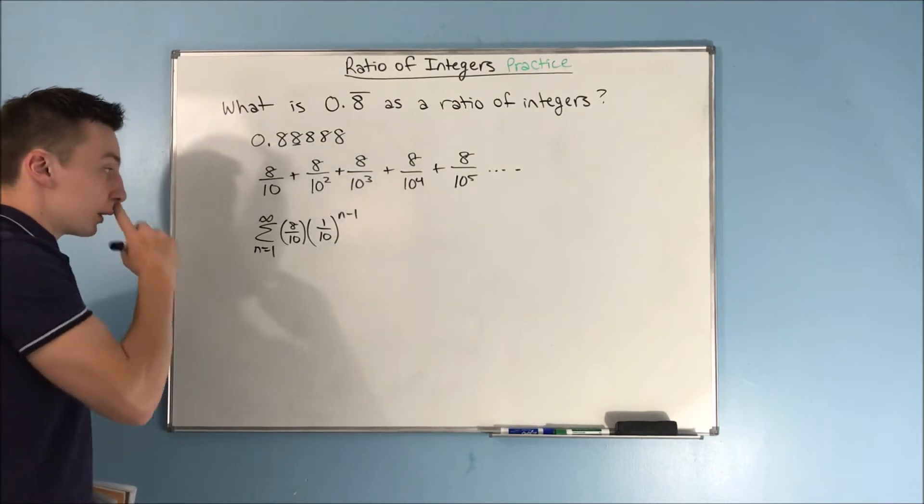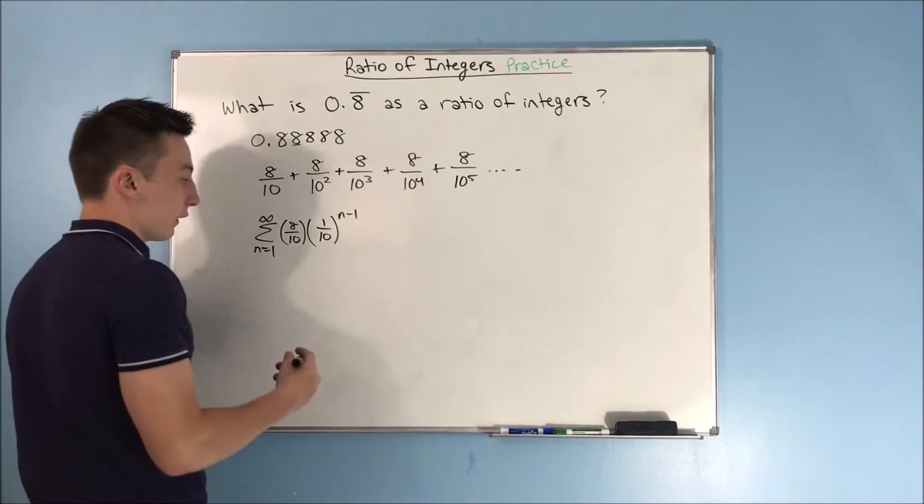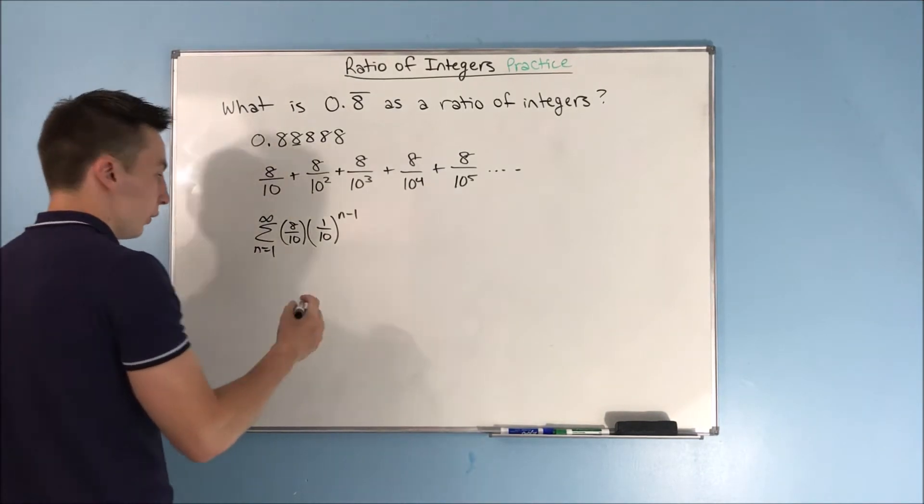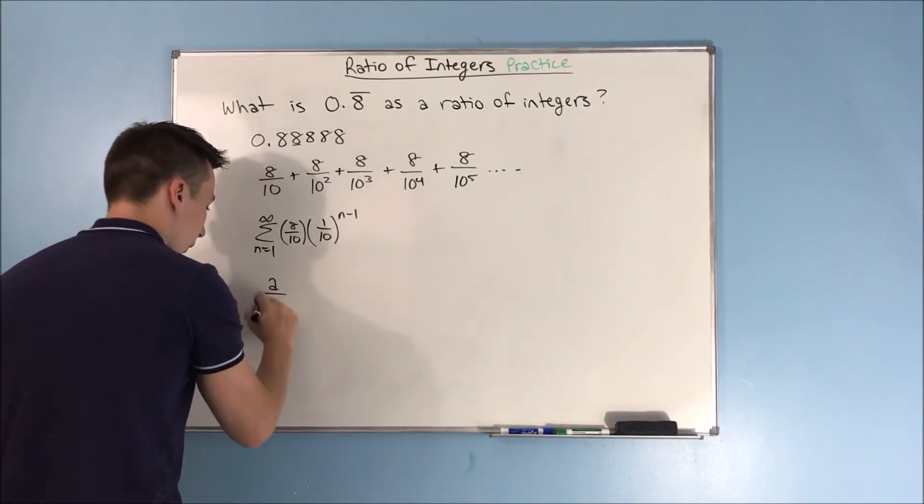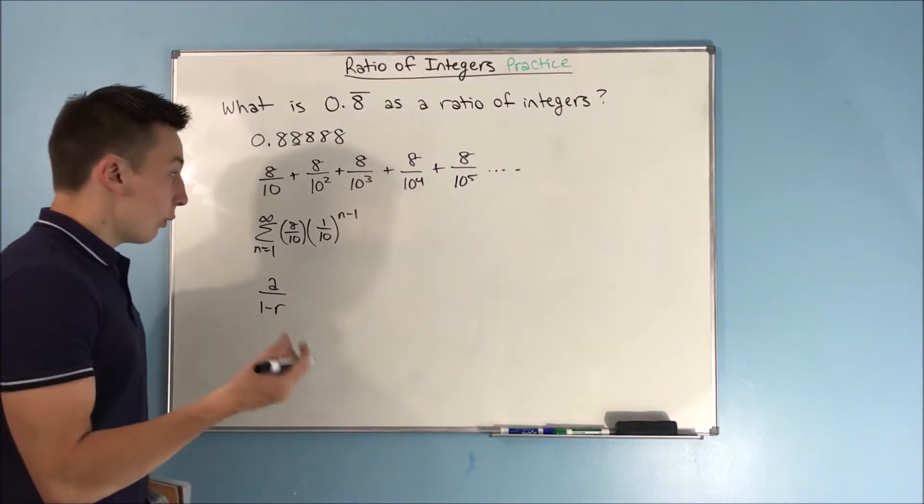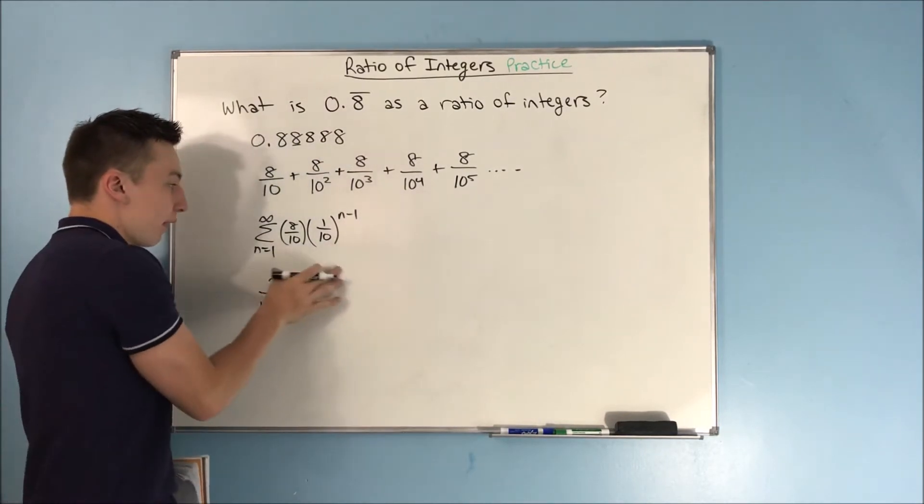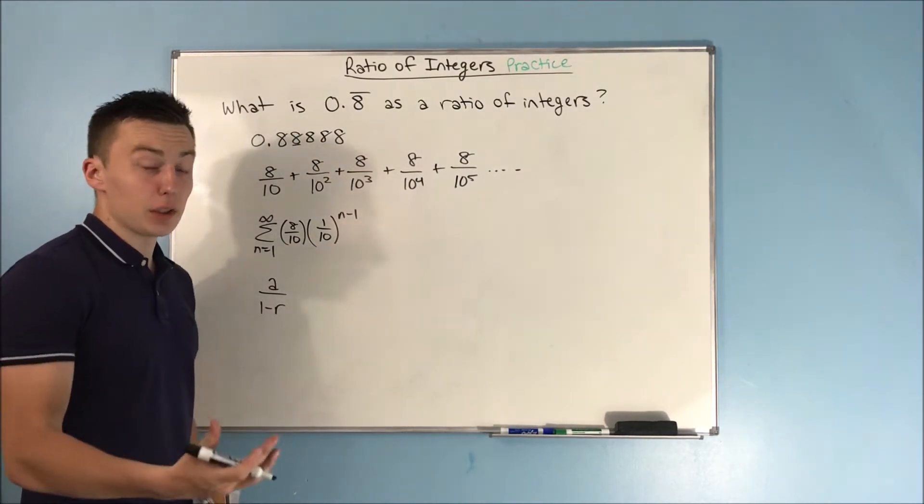So now we can just find the sum. How do we find the sum? We just use a over 1 minus r. And remember, we can find the sum because this r is between negative 1 and 1. We know that this infinite series is convergent.